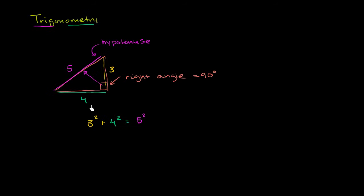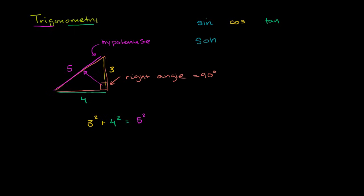Now with that out of the way, let's learn a little bit of trigonometry. The core functions of trigonometry are: the sine function, the cosine function, and the tangent function — written sin, cos, and tan for short. These specify, for any angle in this triangle, the ratios of certain sides. And there's a mnemonic to help you remember the definitions of these functions — it's called SOH-CAH-TOA.